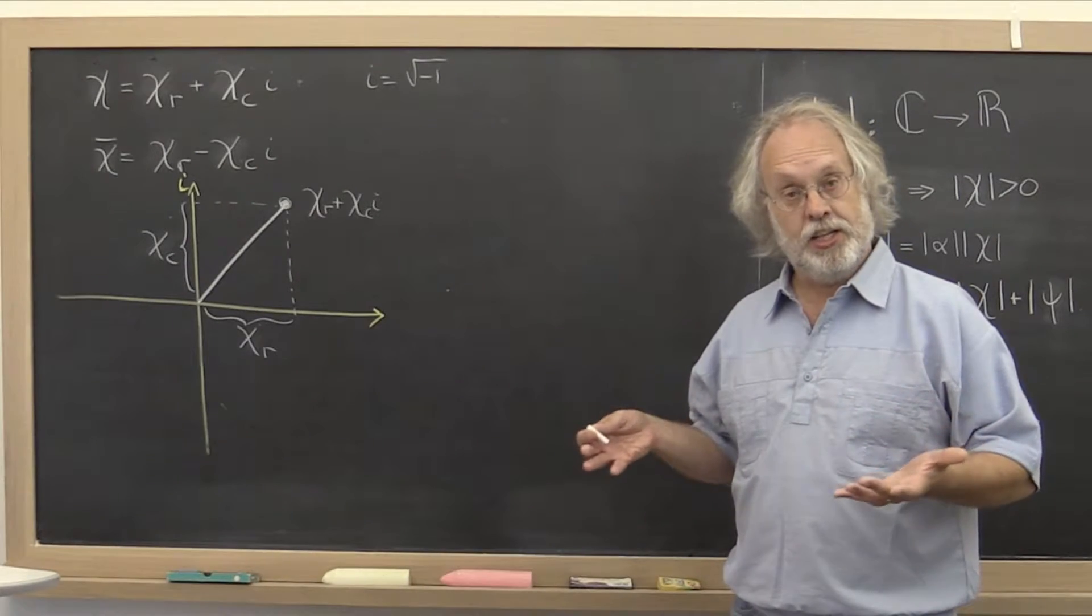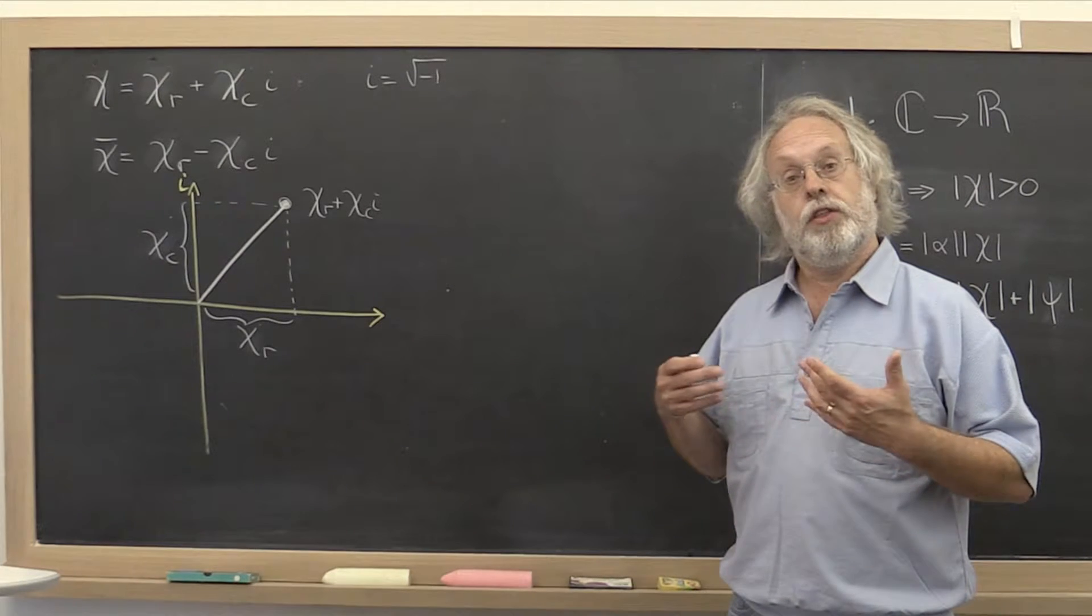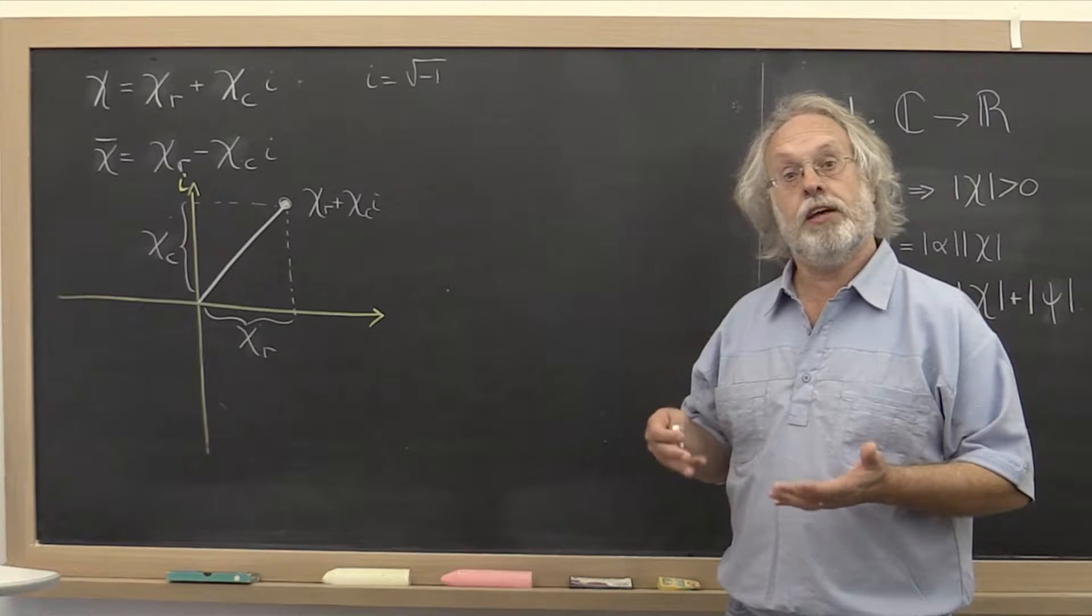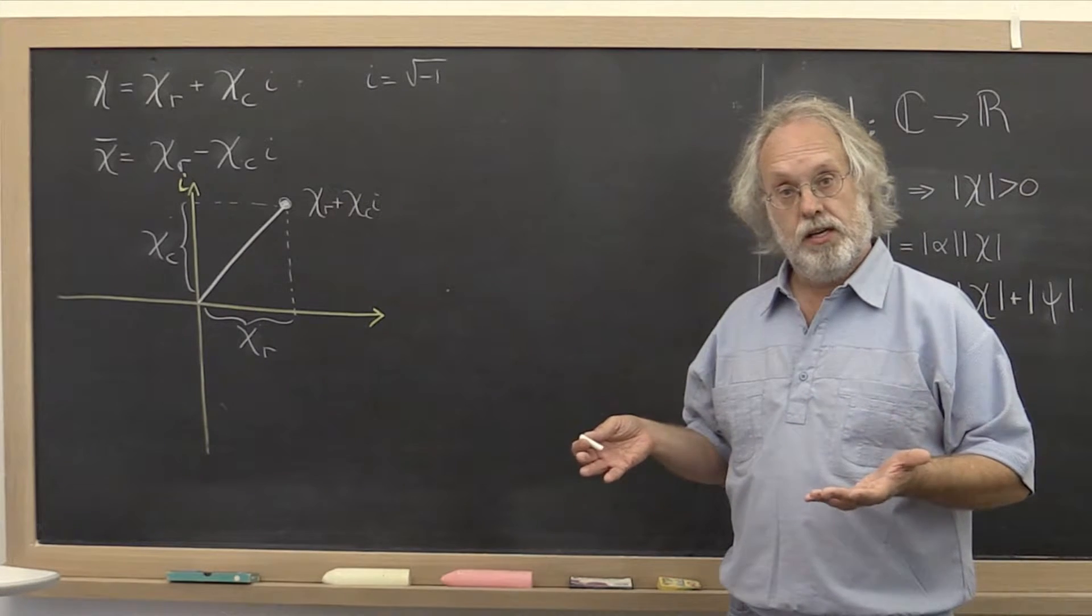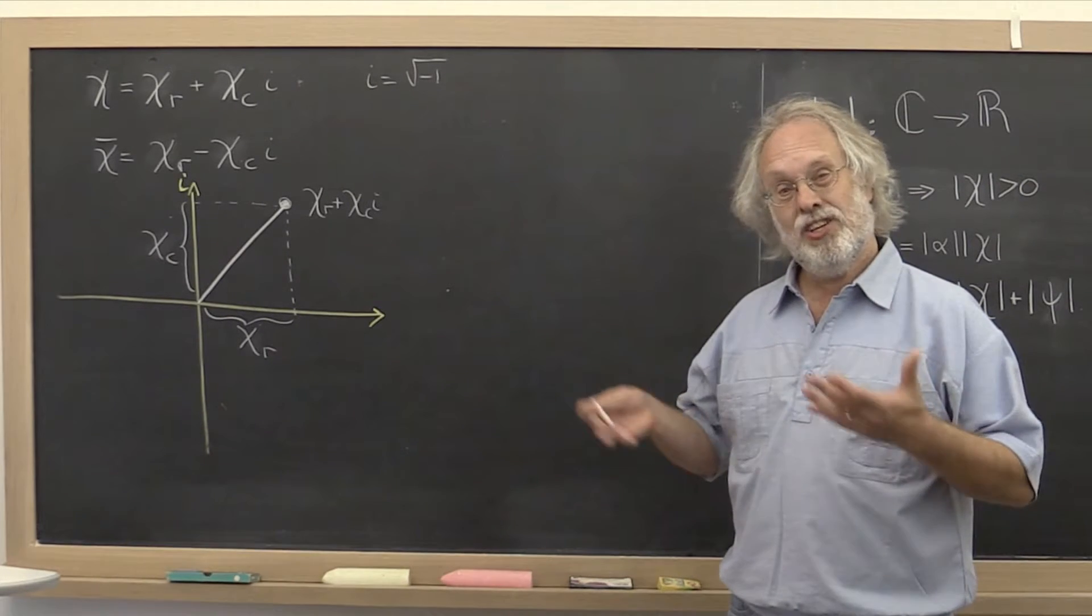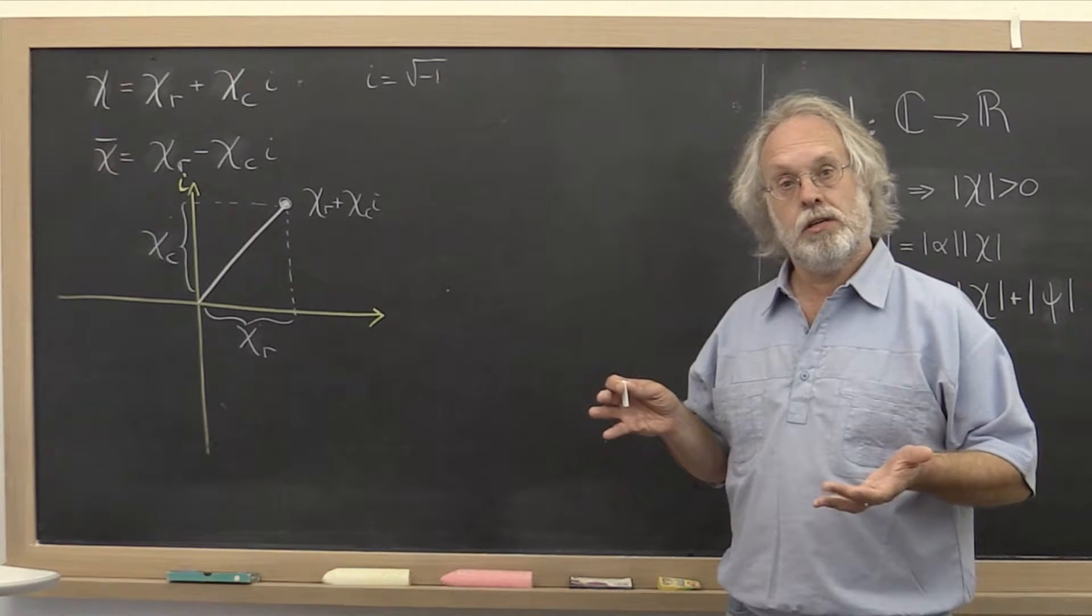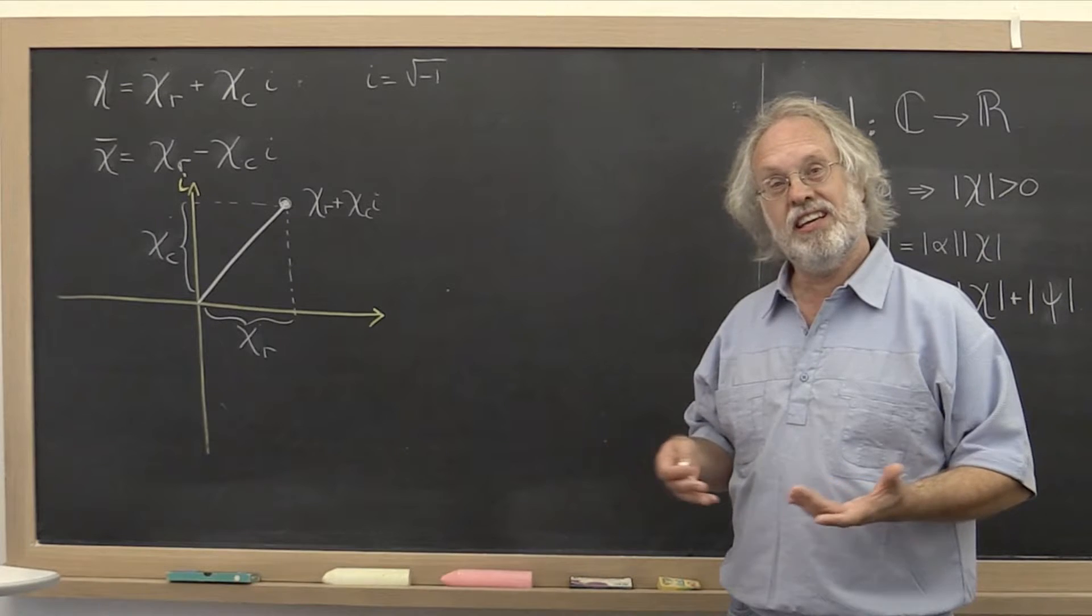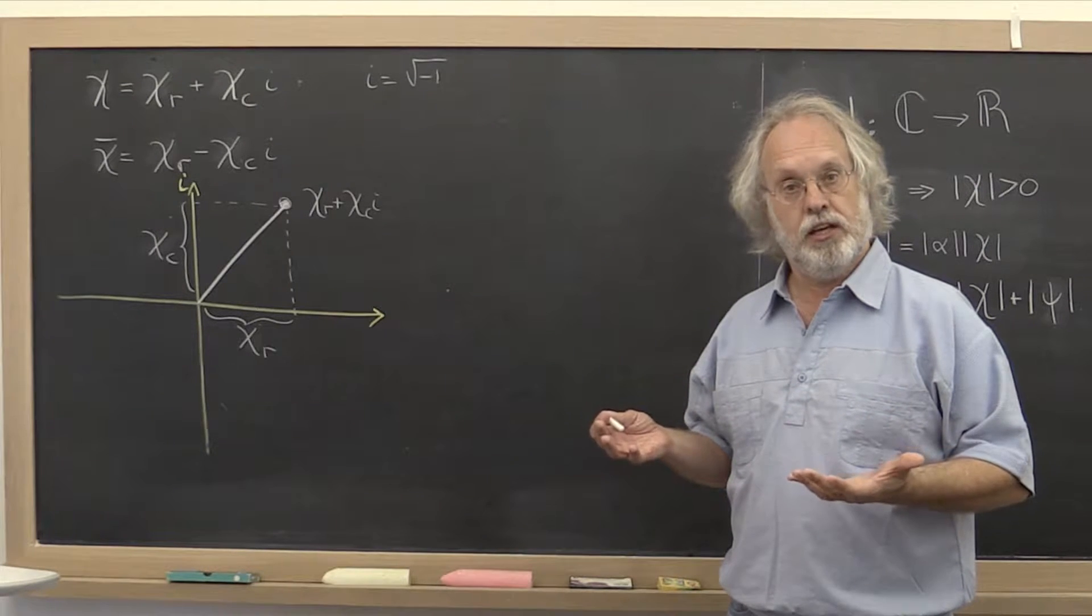In many courses on linear algebra, the theory is explained using real-valued vectors and real-valued matrices first. And then at some point in the course it gets a little awkward because when you start talking about eigenvalues and eigenvectors, then inherently complex values sneak in.